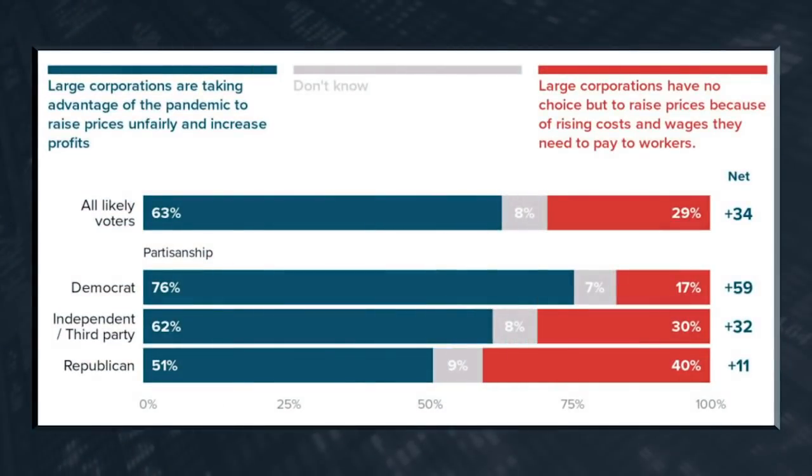I'm not saying there aren't businesses that struggle — most small businesses, restaurants, any kind of business with a large labor component, yes, they're struggling. But the biggest, deepest-pocketed companies in the United States are not struggling because of inflation. They're actually achieving the highest profit rates they've had since 1950. A majority of all political affiliations believe large corporations are taking advantage of the pandemic to raise prices — 51% of Republicans, 62% of independents, 76% of Democrats, and overall 63% of people believe that large companies are abusing the situation to increase their profits.